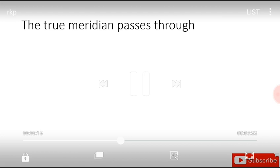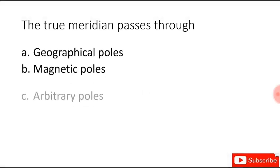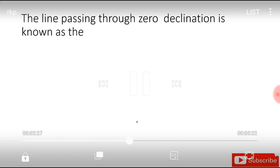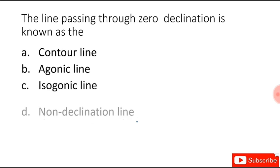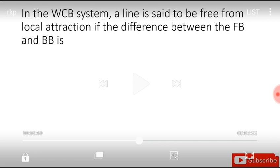The true meridian passes through geographic poles, magnetic poles, arbitrary poles, or azimuthal poles, and the answer is geographical poles. The line passing through zero declination is known as contour line, agonic line, isogonic line, or non-declined line, and the answer is agonic line.